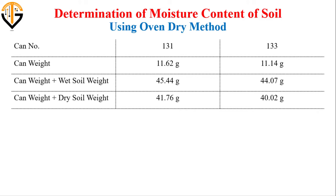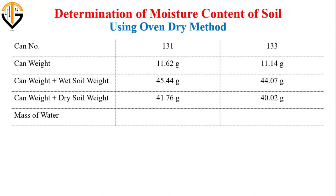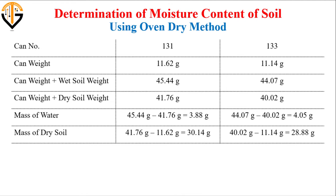Now we'll move on to the calculation part. Here you can see all the input observation values. First, we determine the mass of water: the weight of wet soil plus can is subtracted from the dry weight of soil plus can. Similarly, the mass of dry soil is obtained from can weight plus dry soil minus can weight. The mass of dry soil comes out to be 30.14 grams.